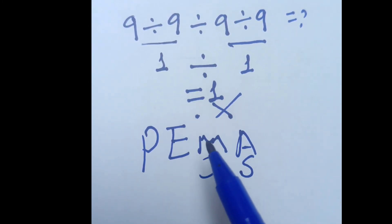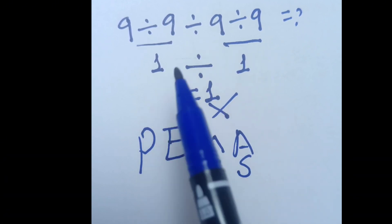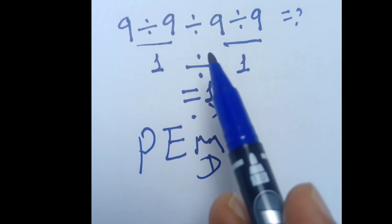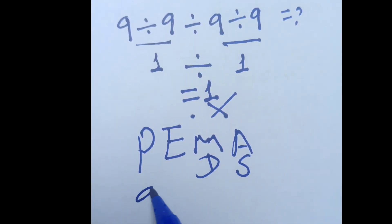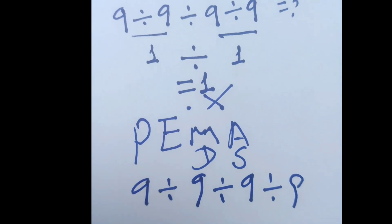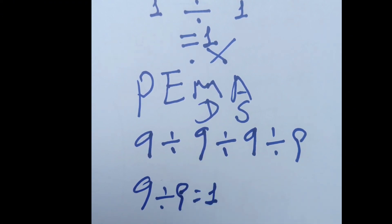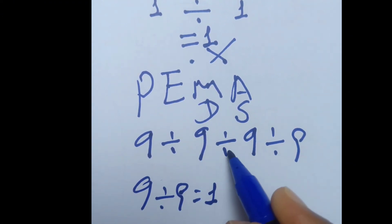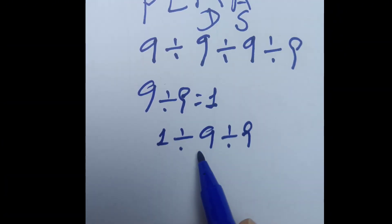In our case, we have only division signs, so we operate from left to right. So: 9 divided by 9 divided by 9 divided by 9 divided by 9. First, 9 divided by 9 is 1, so this equals 1 divided by 9 divided by 9 divided by 9.